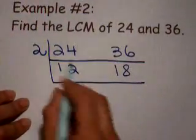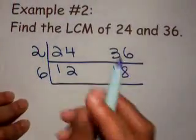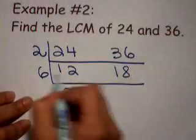12 and 18, they have 6 in common. So 12 divided by 6 is 2. 18 divided by 6 is 3.